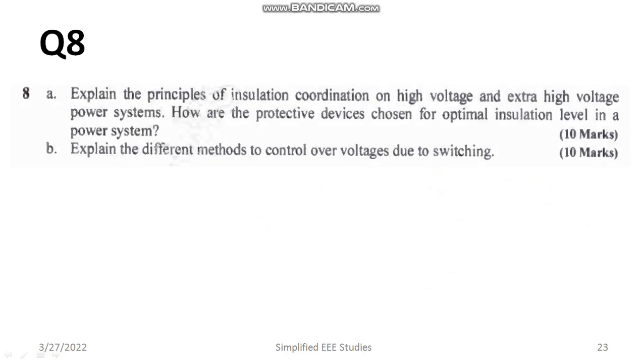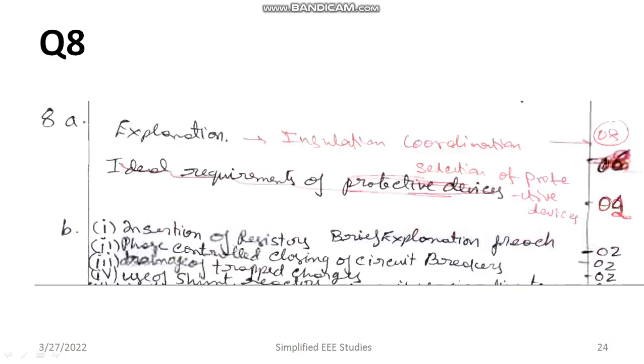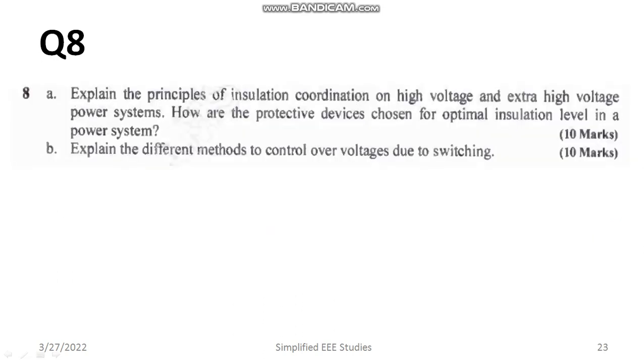Explain the different methods of control of overvoltage due to switching. You have to mention the insulation of resistors and phase control closing of circuit breakers, then usage of shunt reactors. Likewise you can explain any of the convenient methods. That is also yet to be completed. Partially I have done and let me complete it.